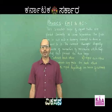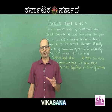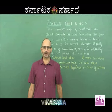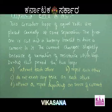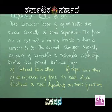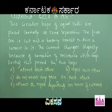Here is one more very conceptual problem that will really help you understand electromagnetic induction. Two circular loops of equal radii are placed coaxially at some separation. The first one is cut and a battery is inserted to drive a current in it. The current changes slightly because of the variation of resistance with temperature. During this period, the two loops will: attract each other, repel each other, exert no force, or attract/repel depending on the sense of current?